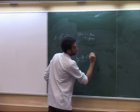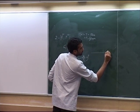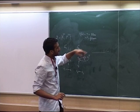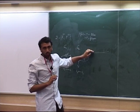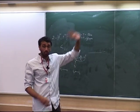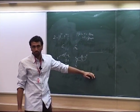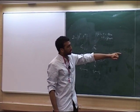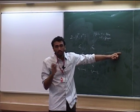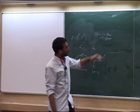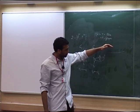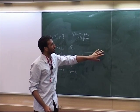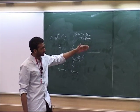In every round, either the spoiler wins or the duplicator wins. The game is played for n rounds. If at any point the spoiler has won a round, the game stops and the spoiler has won the whole game. But if the duplicator wins a round, he has only won that round. For him to win the game, he needs to ensure his success in all rounds of the game.